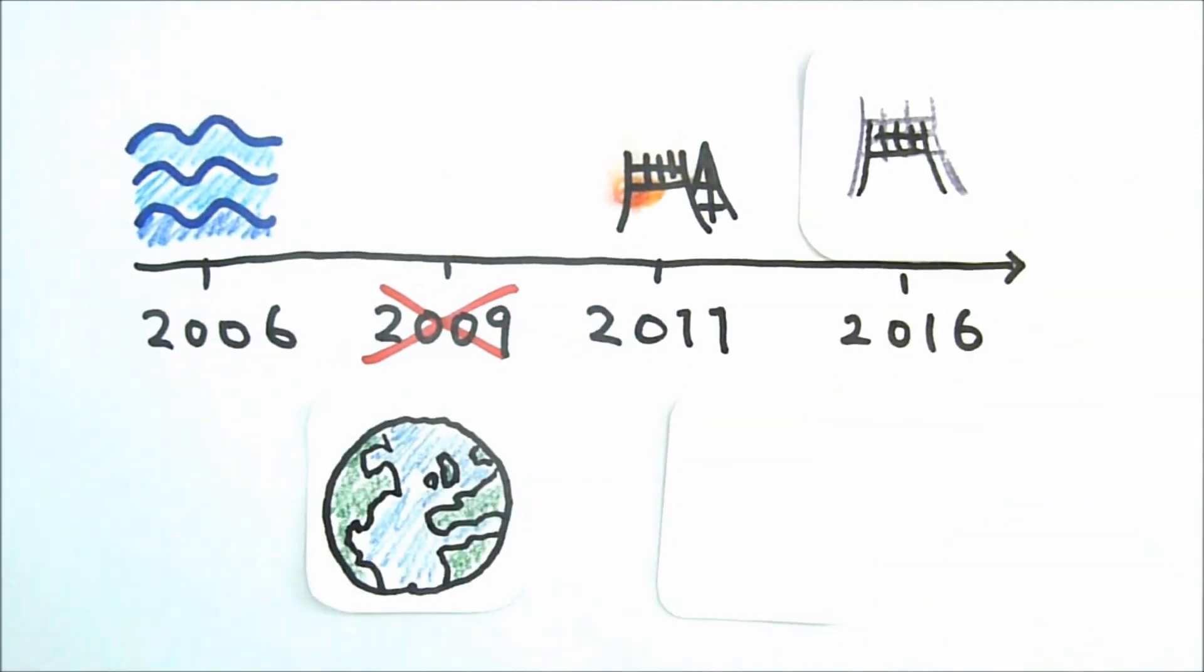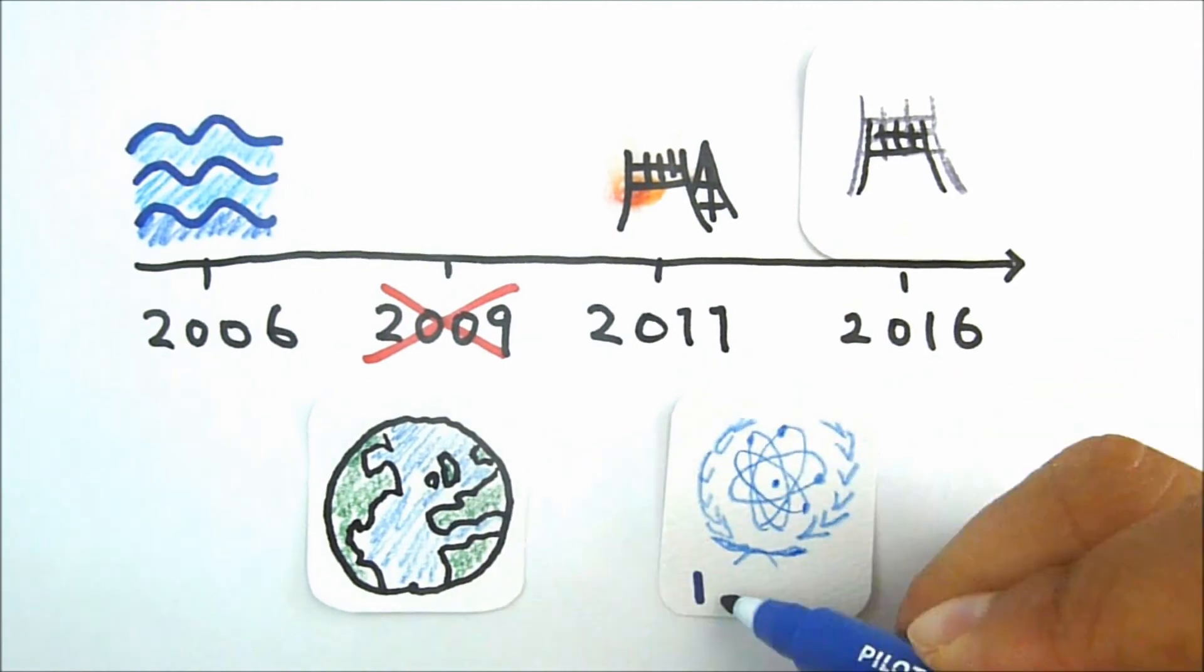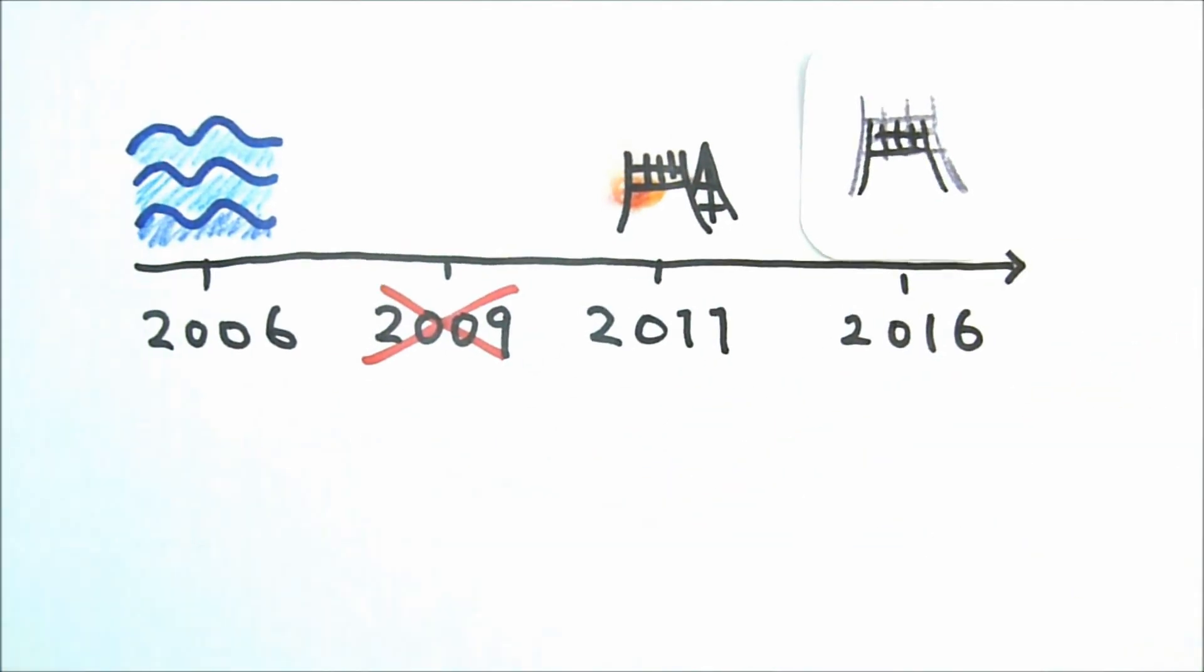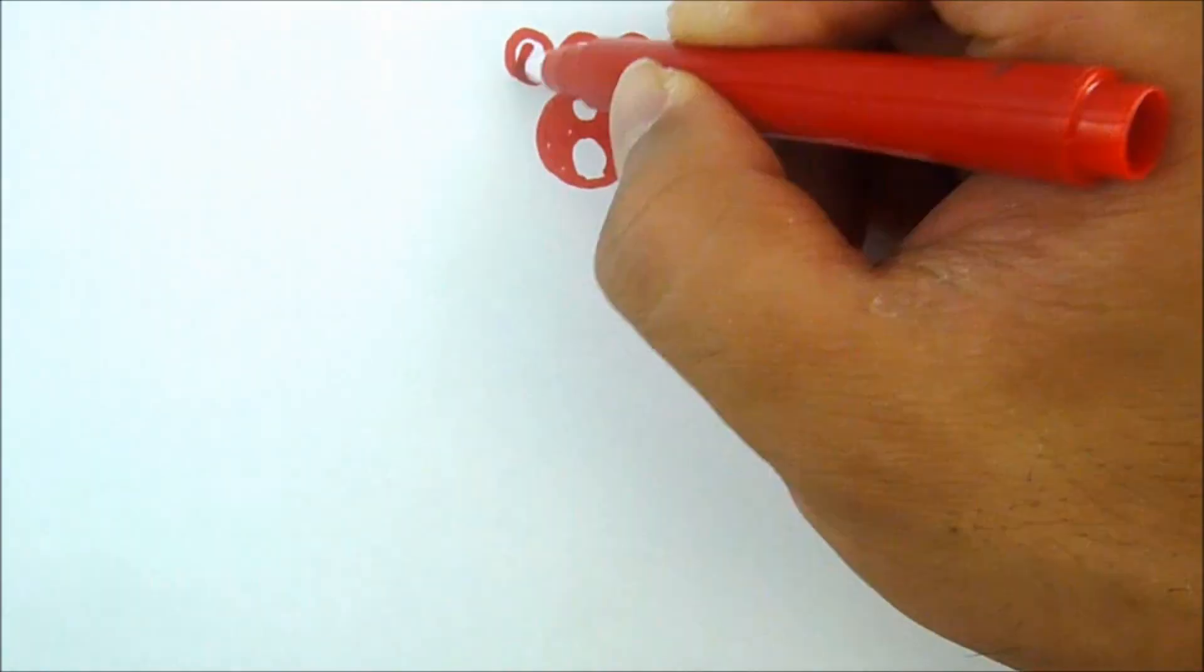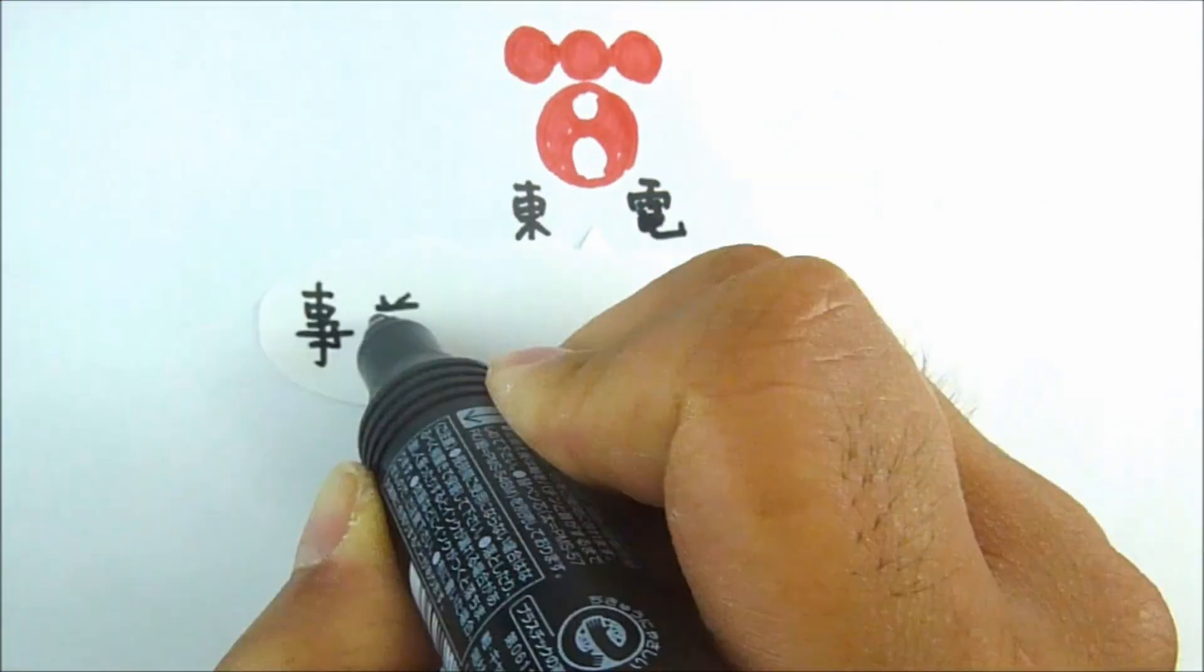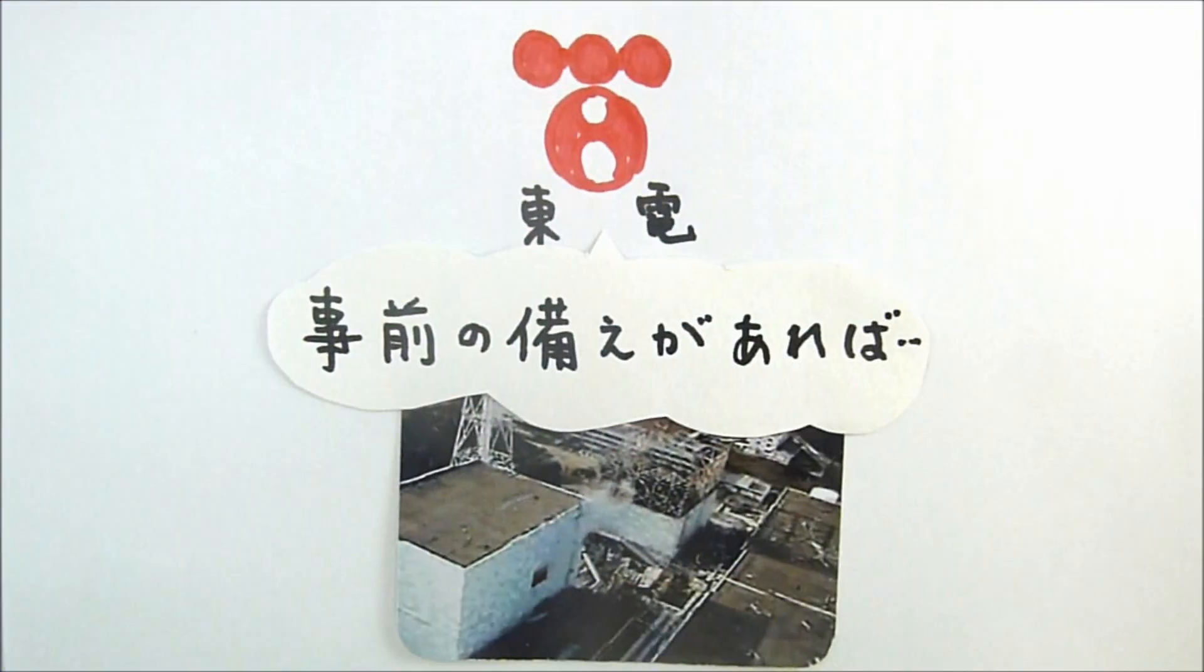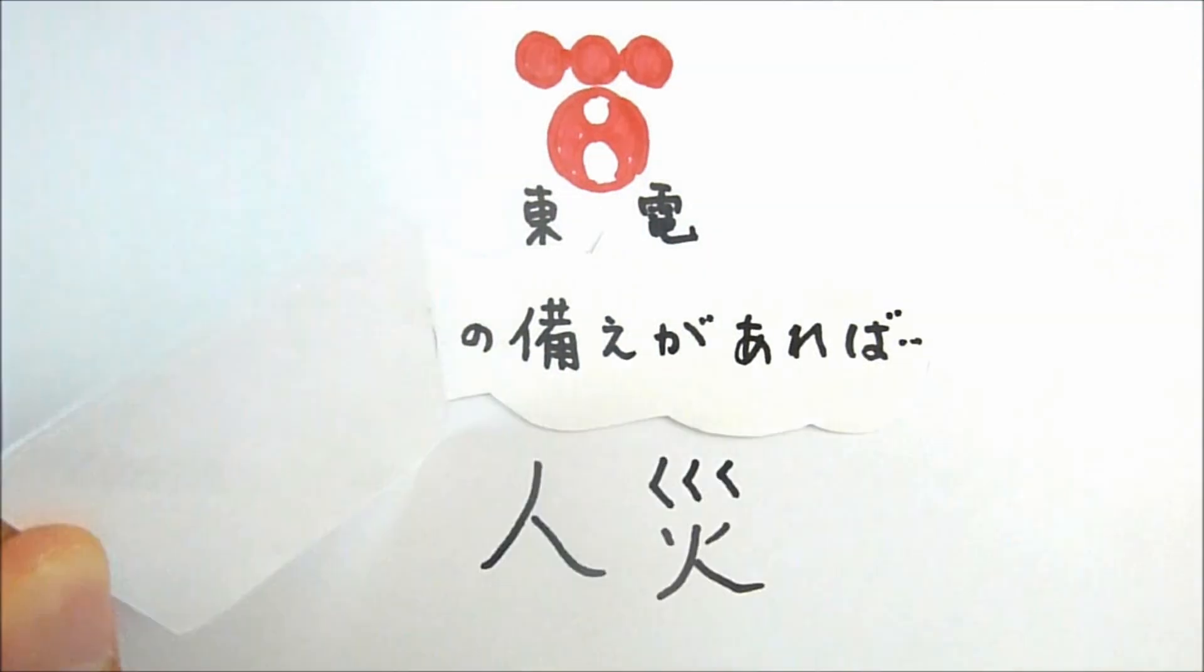Contrary to other countries and international organizations, Japan was putting off safety measures. TEPCO has since admitted that, in retrospect, the nuclear plant was not well guarded against accidents. In other words, the Fukushima crisis could have been averted if proper measures had been implemented. So it's reasonable to say the disaster was man-made.